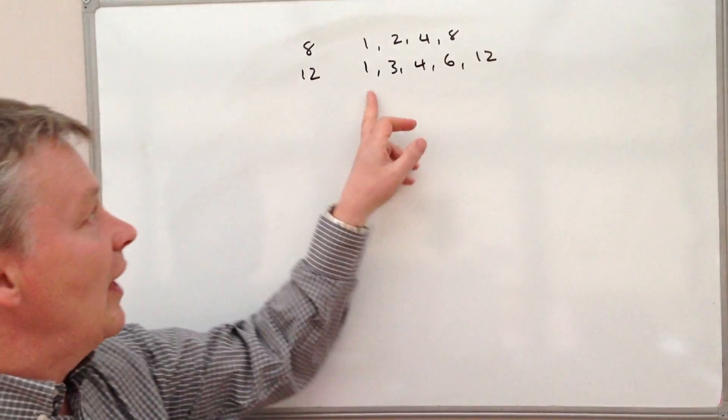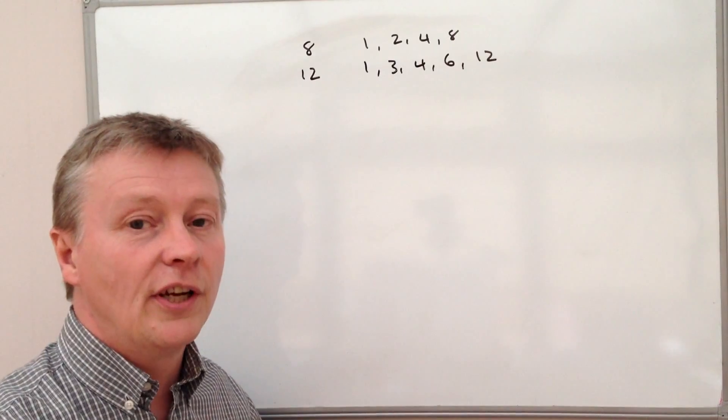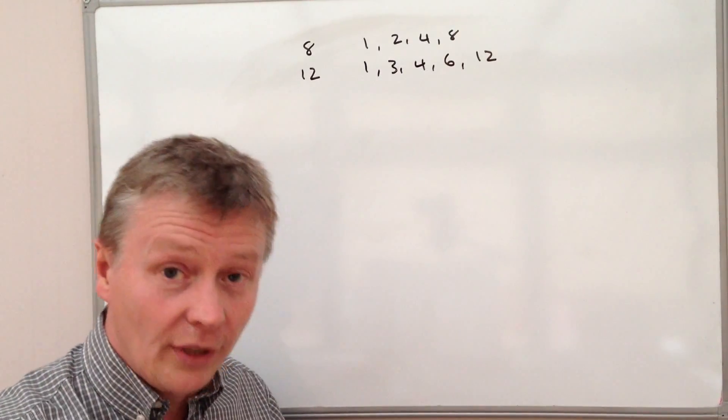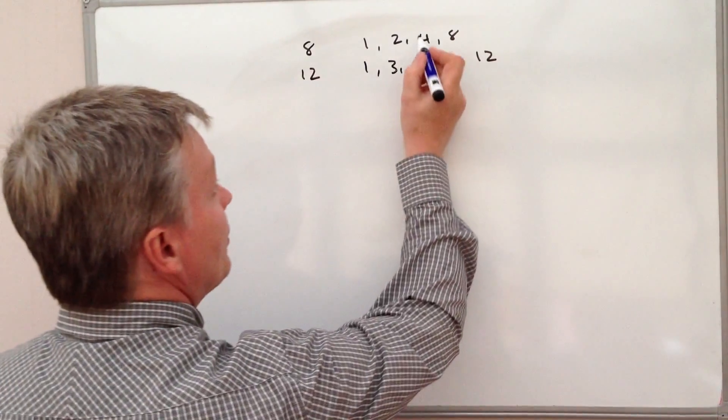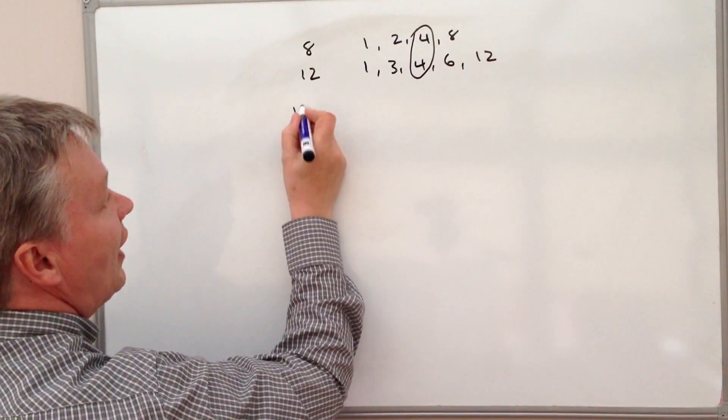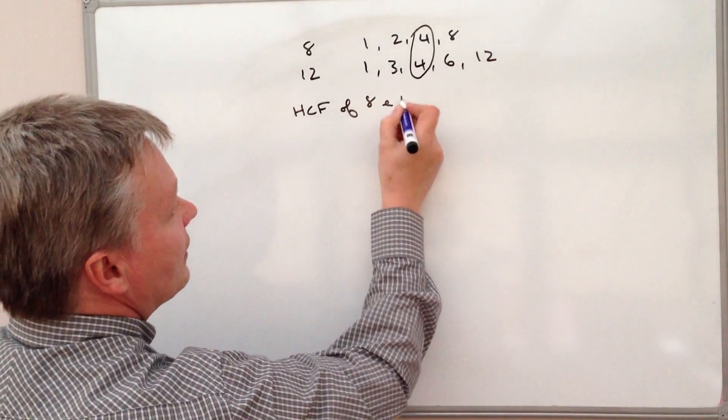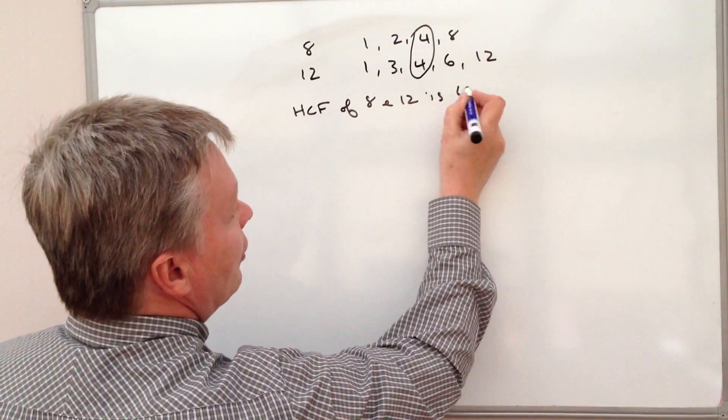So what we've got there is a list of all the factors of 12. And we just look for the highest common factor to both of them, which happens to be, in this particular case, 4. So the highest common factor of 8 and 12 is 4.